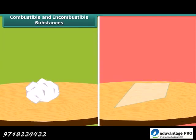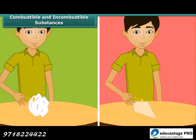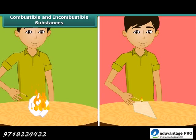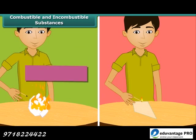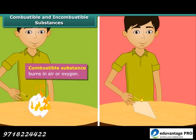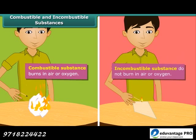There are two types of substances. Some substances catch fire and burn while the other group does not. A lighted matchstick brought close to paper causes it to catch fire — it is called a combustible substance. Glass does not burn; substances which cannot burn in air or oxygen are called incombustible substances.